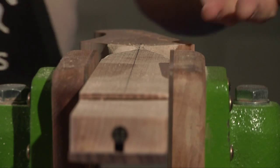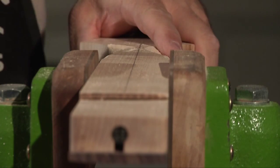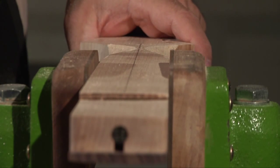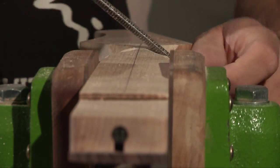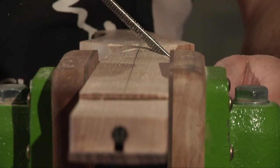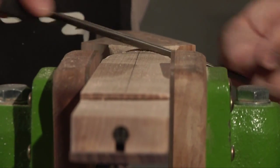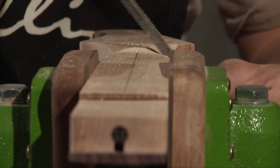So the maple is generally a very hard wood, it's very dense, doesn't require any grain fillers or anything, but maple is hard. So it takes a little bit more muscle to carve this out.